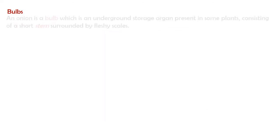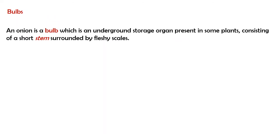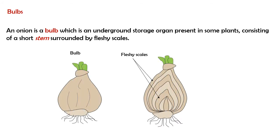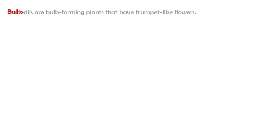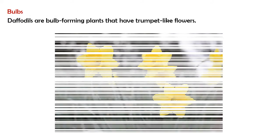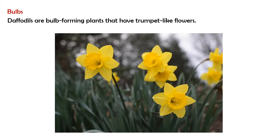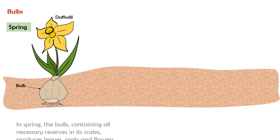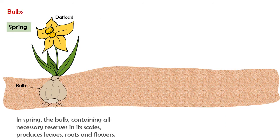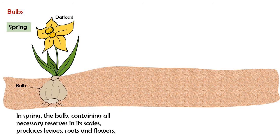These are onions. An onion is a bulb, which is an underground storage organ present in some plants, consisting of a short stem surrounded by fleshy scales. Daffodils are bulb-forming plants that have trumpet-like flowers. In spring, the bulb containing all necessary reserves in its scales produces leaves, roots, and flowers.